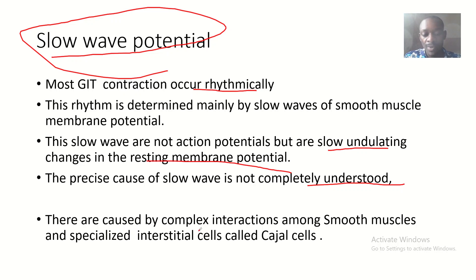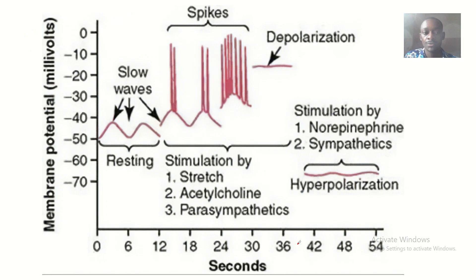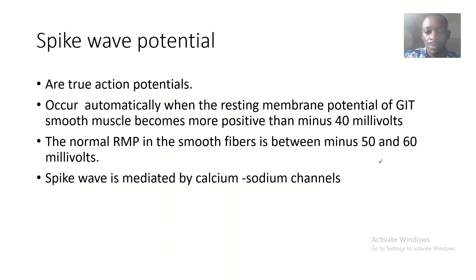The precise cause of slow waves is not completely understood, but they are caused by complex interactions among smooth muscles and special interstitial cells called the interstitial cells of Cajal. It is this interaction between the cells of Cajal and the smooth muscle cells that causes the slow wave potential. So these are the slow waves — just small changes that are not true action potentials.